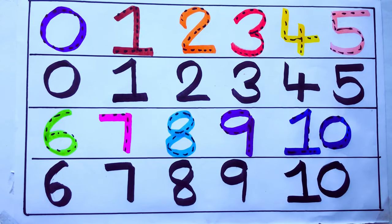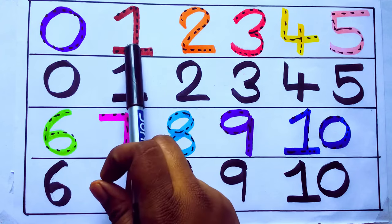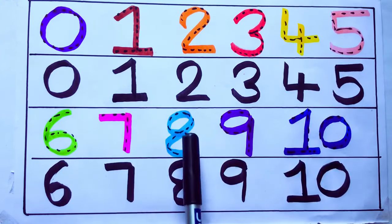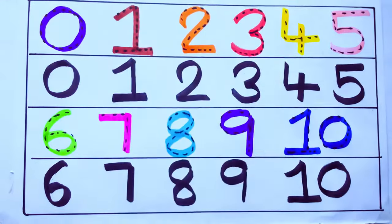One second learning numbers: 0, 1, 2, 3, 4, 5, 6, 7, 8, 9, 10. Okay. Bye kids.